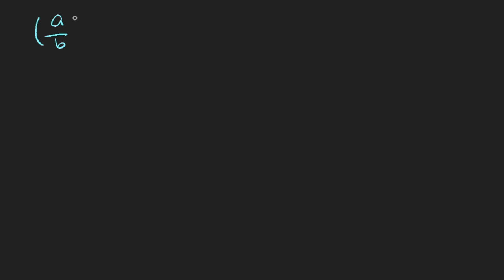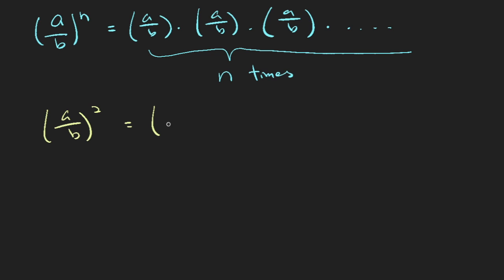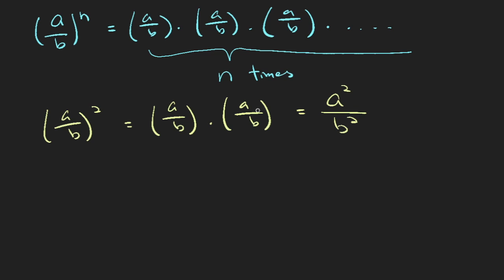Finally we come to the last rule, which is (a over b) to the power of n. This is similar to the previous case — you have n sets of a over b, so a over b multiplied by a over b, n times. For example, (a over b) to the power of 2 gives 2 sets, resulting in a squared over b squared, because the numerators multiply and the denominators multiply. So (a/b)^n is simply a^n over b^n.